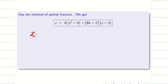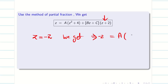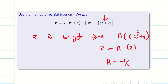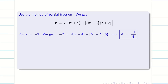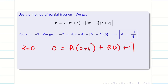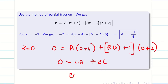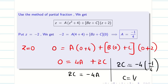If I choose Z equal to minus 2, the second term becomes zero and I get A. Putting Z equal to minus 2: minus 2 equals A times (minus 2 whole square plus 4), so minus 2 equals A times 8, giving A equal to minus 1/4. To find the next constants, I put Z equal to 0: 0 equals A times 4 plus C times 2. So 2C equals minus 4A. Substituting A equals minus 1/4, we get C equal to 1/2.